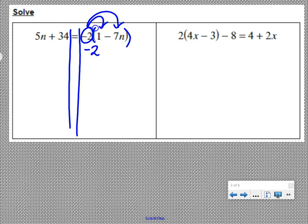Negative two times one is negative two, negative two times negative seven n is positive 14 n.